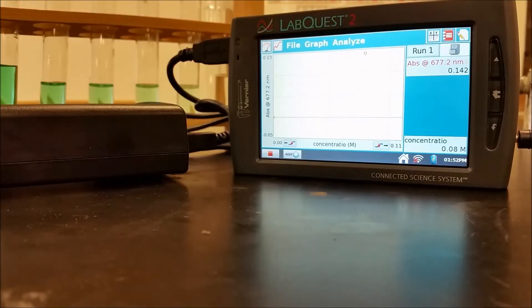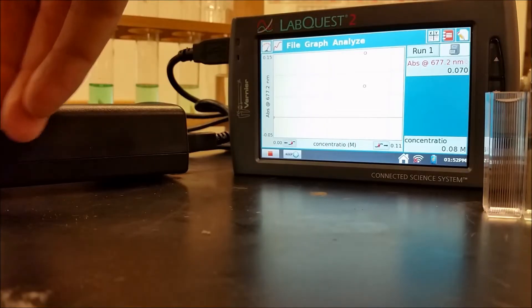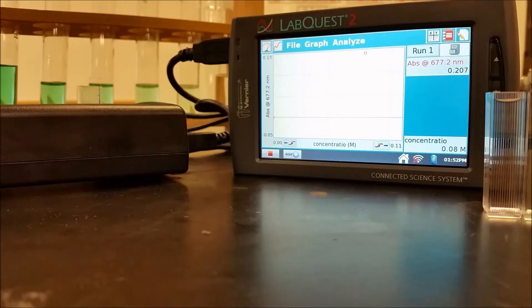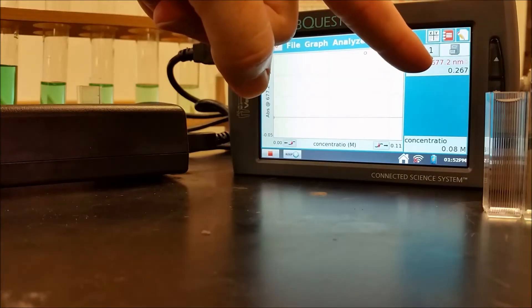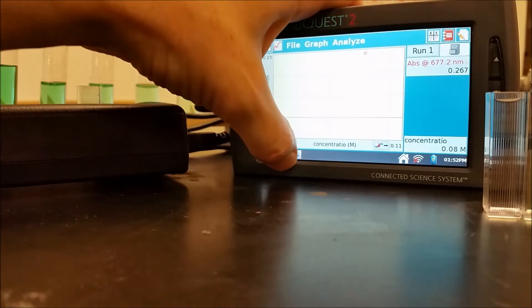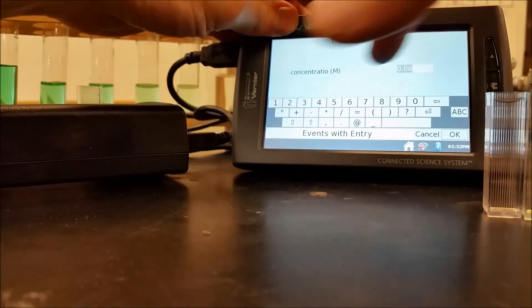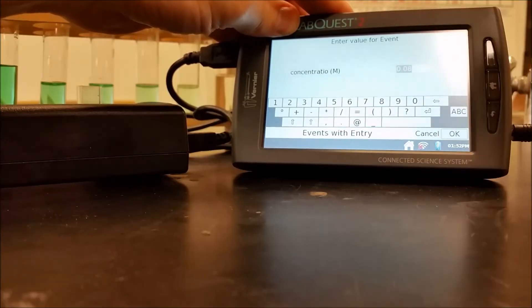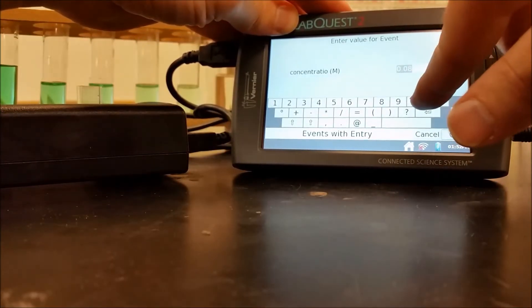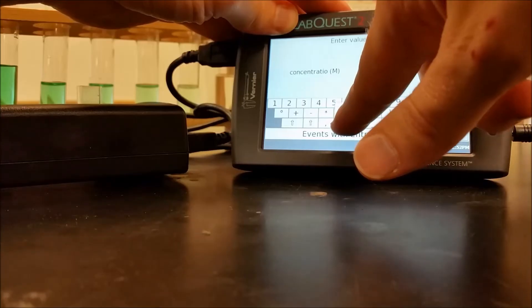So I'll take that out. Put my next one in. So each time I do this, my concentration should be going up. You want to give it a second to stabilize. And then once it does, you can go ahead and keep. And then each time we're going to type in what our next value is, 0.16.